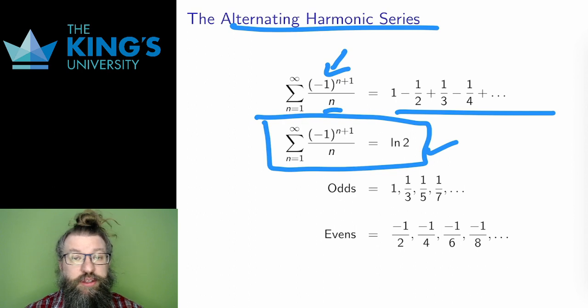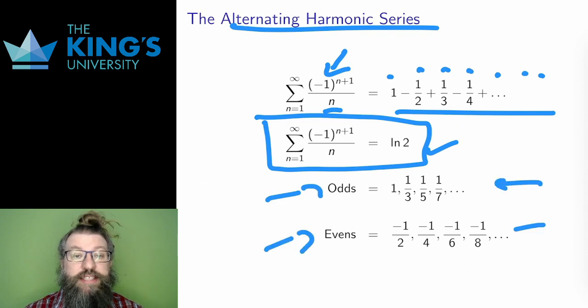In the alternating harmonic series, all the odd terms are positive and all the even terms are negative. I can group these two together as the odds and the evens, and the sum is then ordered by alternating between them. Odd, positive, then negative even, then one positive odd, then one negative even, and so on.